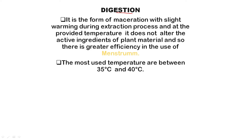Digestion is a process similar to maceration but with a change — we apply light, gentle warmth. If we increase the temperature slightly, the solvent penetrates better. The menstruum is used at a temperature of approximately 35 to 40 degrees Celsius.